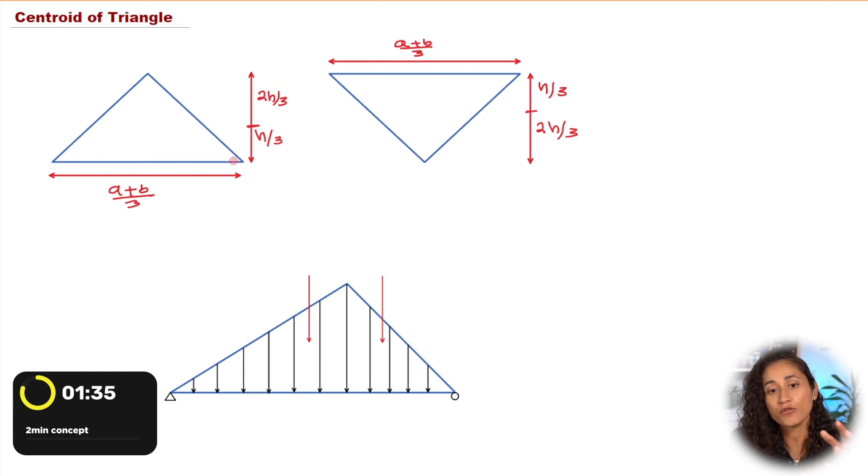Now what if we are given this triangle but it is flipped? This is where I see a lot of students make the mistake, so just be careful. If the triangle that you have is flipped and you're trying to find the centroid above the y-axis, which is the distance from here to where the centroid is, that distance is going to be 2h over 3 and not h over 3.